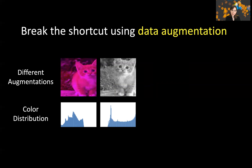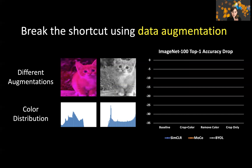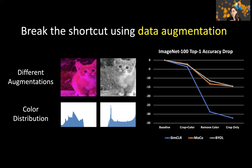However, when you use data augmentation, it makes contrastive learning vulnerable to those augmentations. We can look at the performance of contrastive learning as we remove these augmentations — for SimCLR on ImageNet-100, the performance degrades by about 32% accuracy. MoCo and BYOL are slightly better, but their performance still degrades by 15% in accuracy compared to having these augmentations.